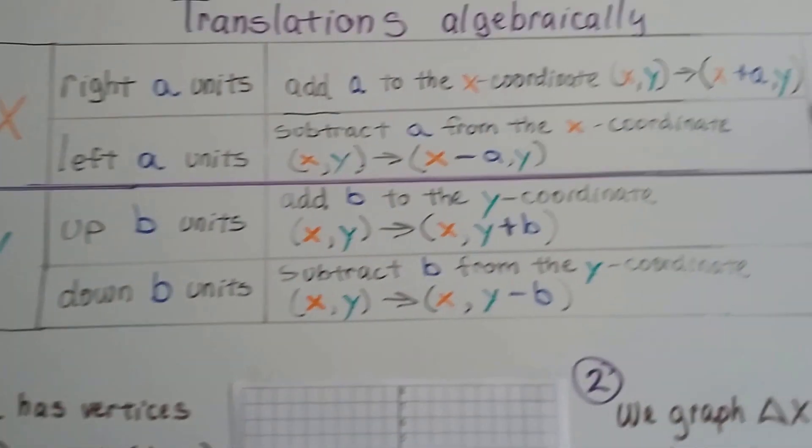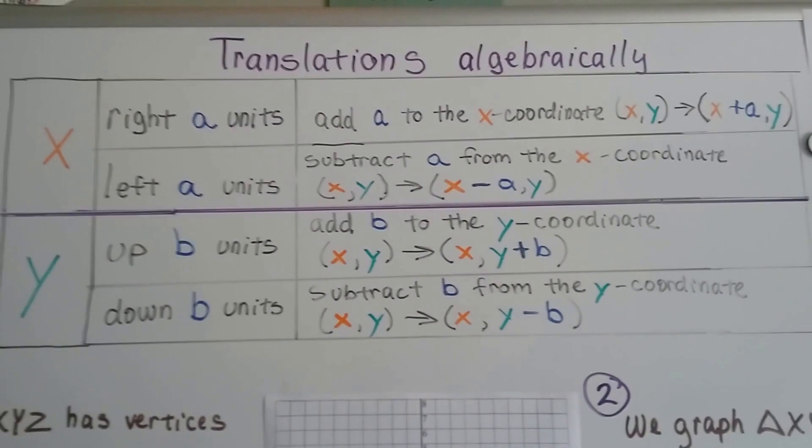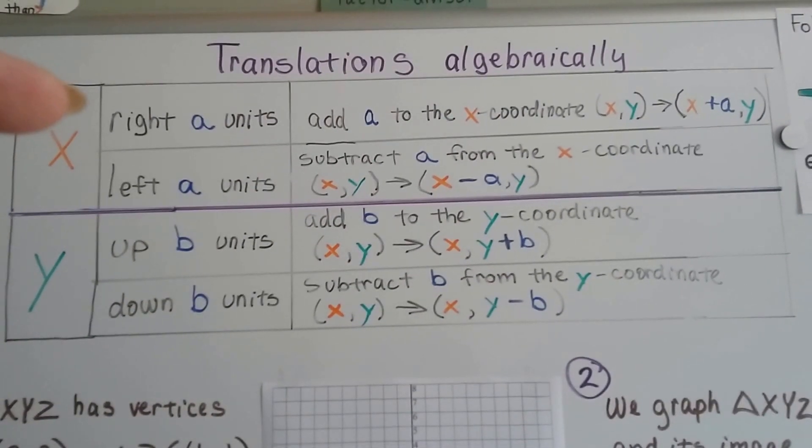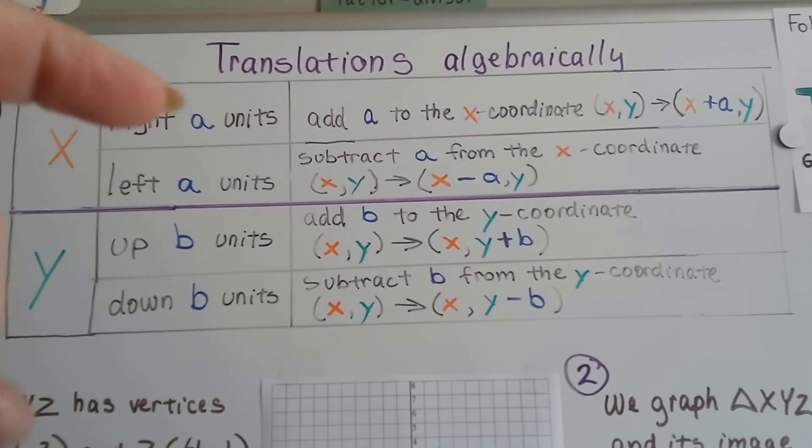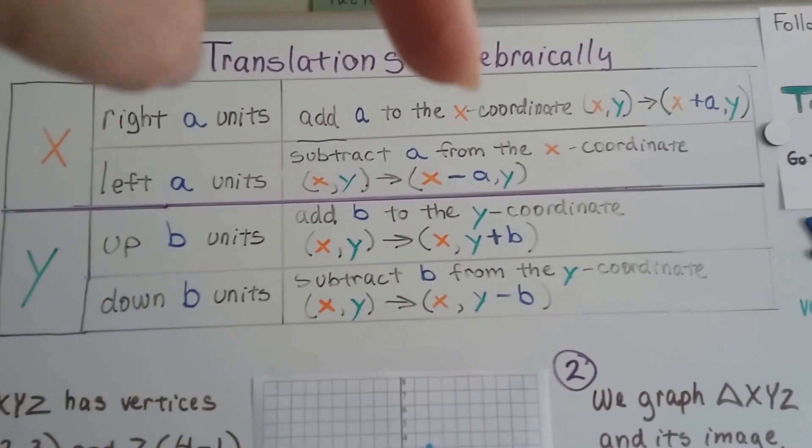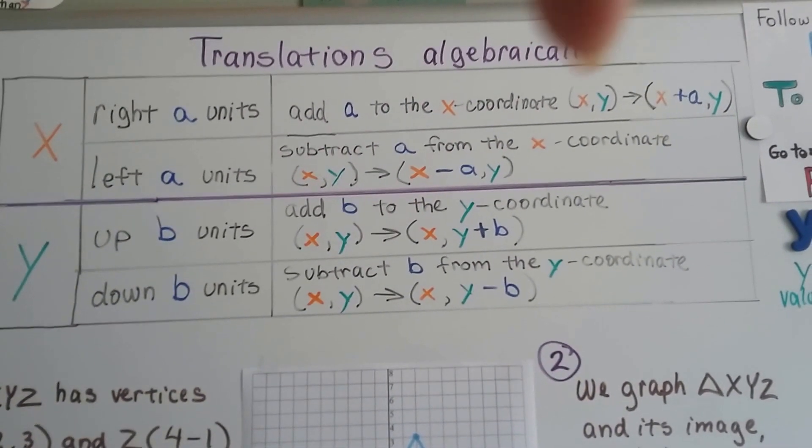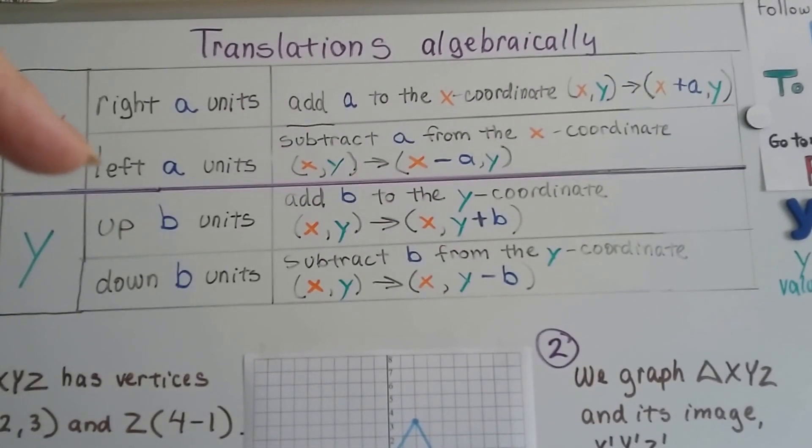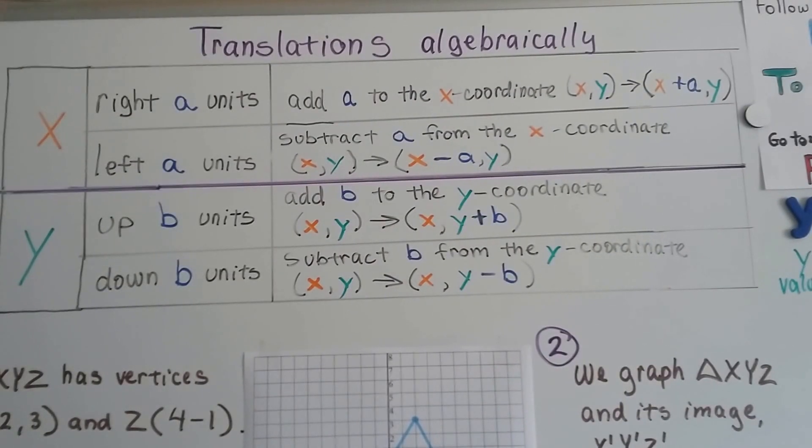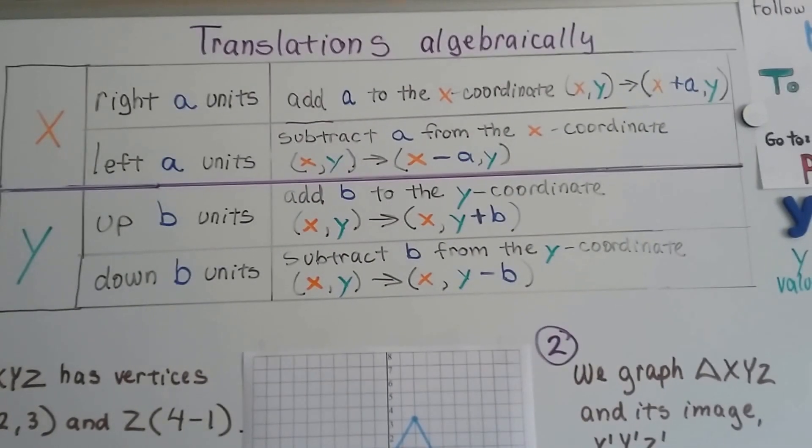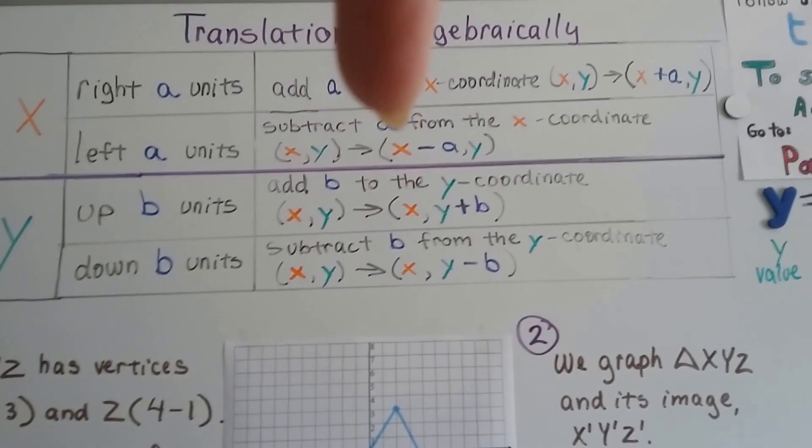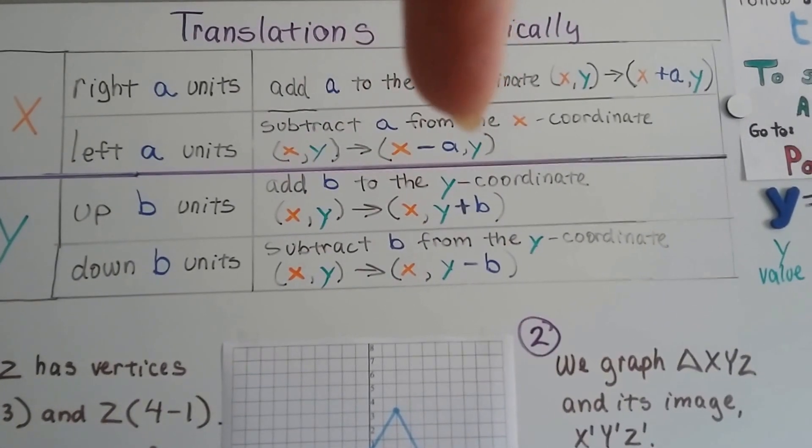So here's our little chart of translations algebraically. For the X values, for right, if we have A units, we're going to add A to that X coordinate. It's going to be X and Y becomes X plus A and then the Y. And if we're going to move left A units, a number of units, we're going to subtract A from the X coordinate. So X, Y will be X minus A and then Y.